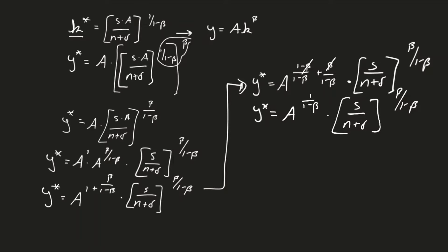Let's write it in a different color so that way we know that we finished. Your y-star will always equal a to the 1 over 1 minus beta multiplied by S over N plus delta to the beta divided by 1 minus beta.